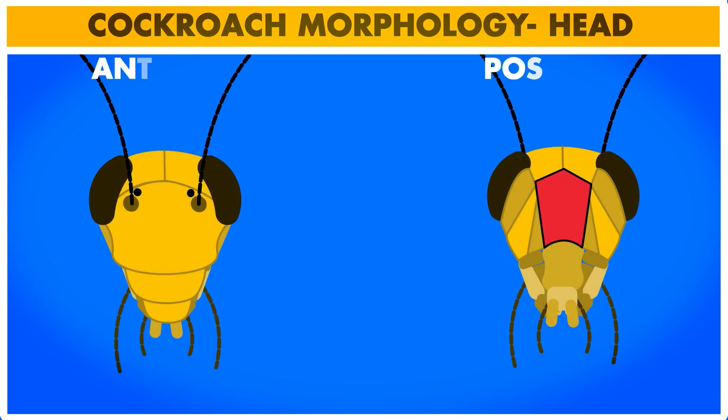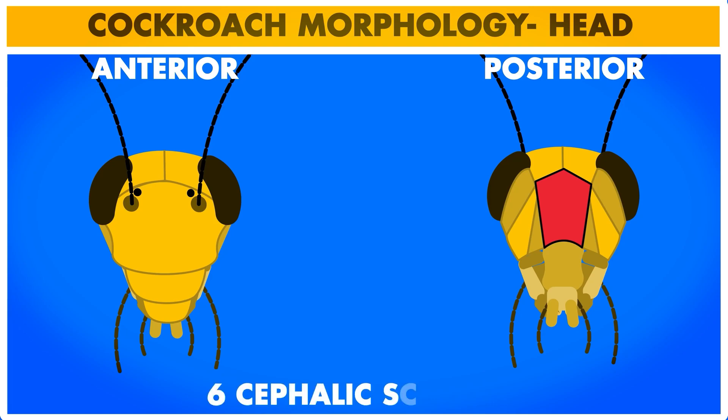The triangular head is made up of six chitinous plates called cephalic sclerites. In adult cockroach, these six cephalic sclerites are fused together and is called a capsule.